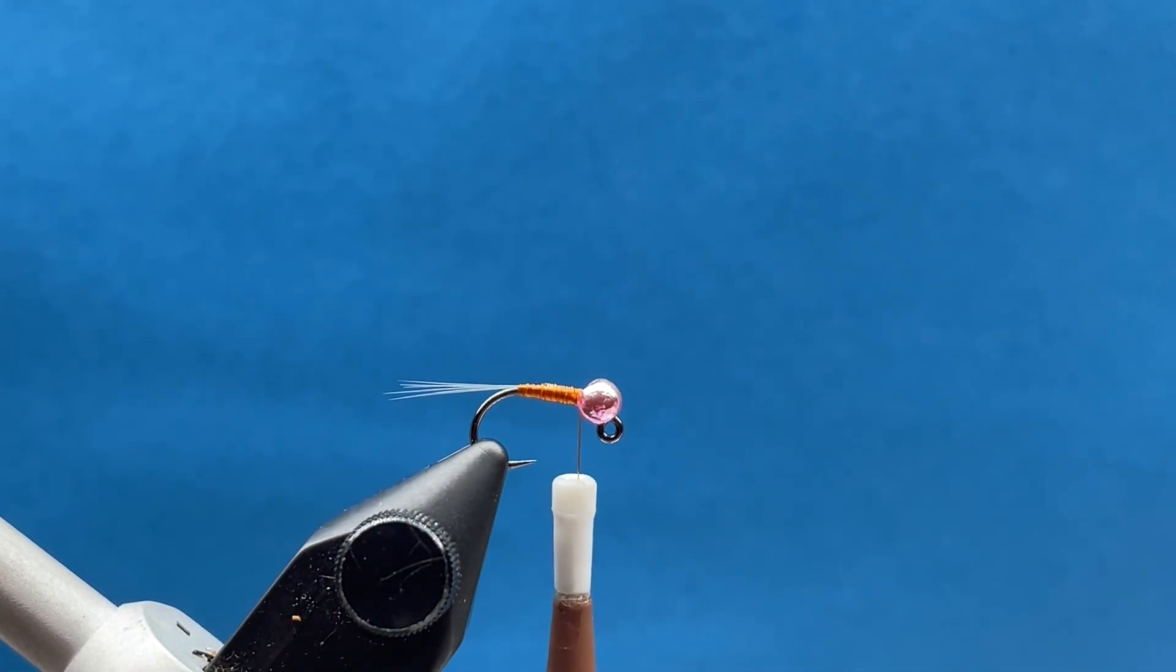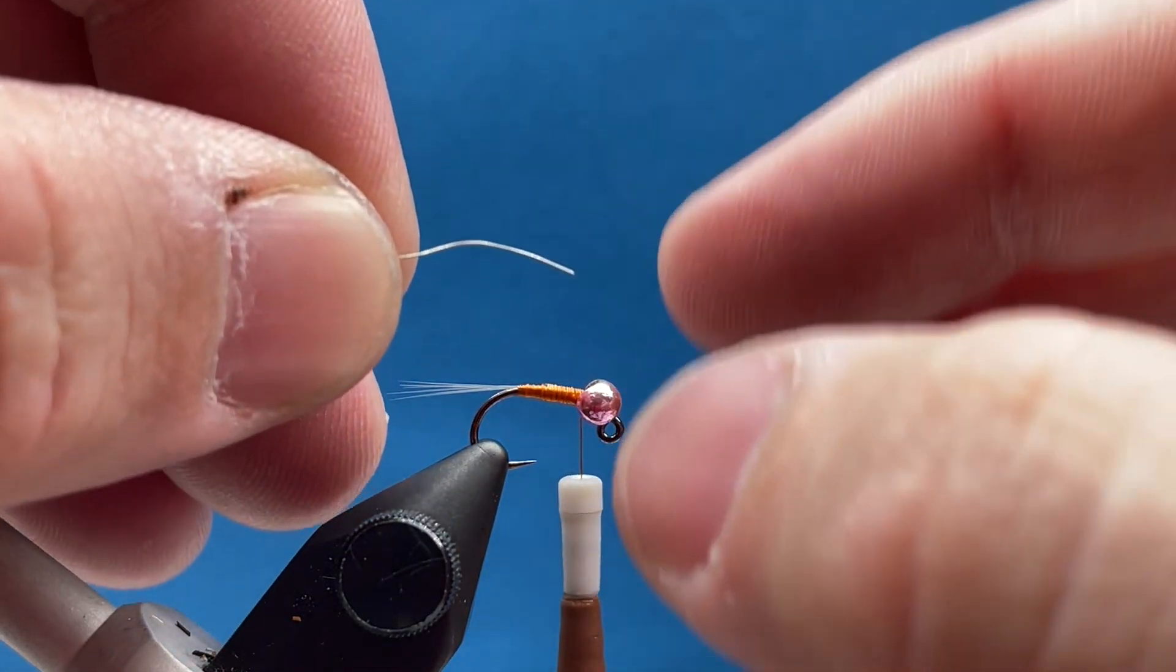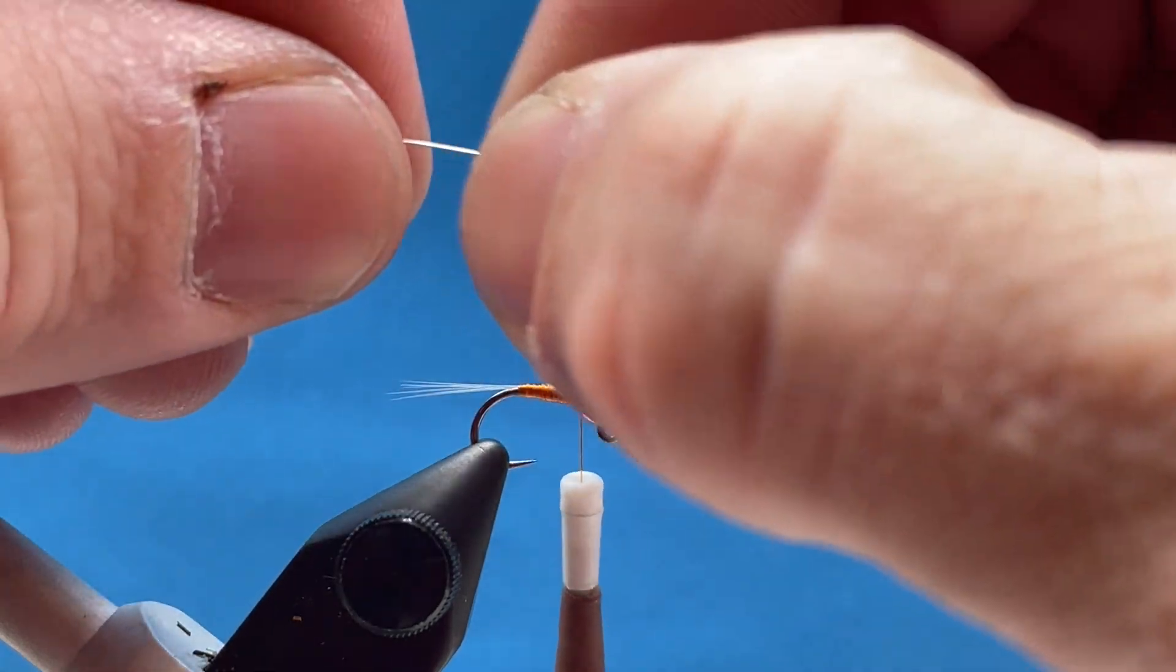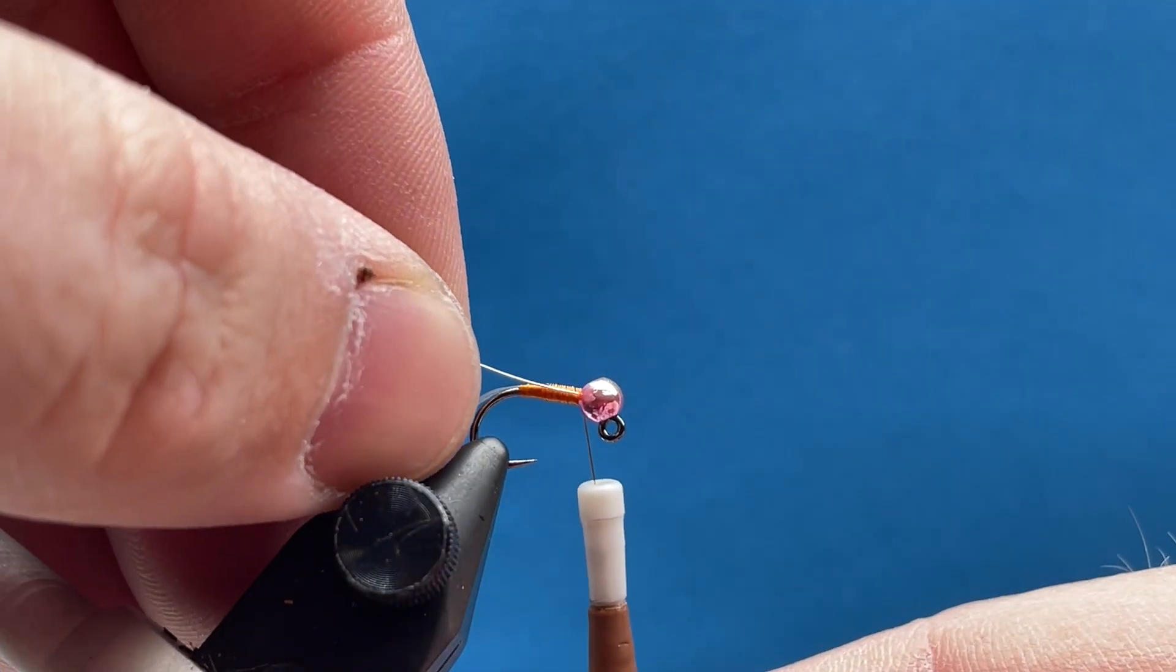For this color combo, I'm just going to do the small silver wire, and I'm going to tie this right to the side of the hook shank and almost just kind of poke it right up here inside the bead.